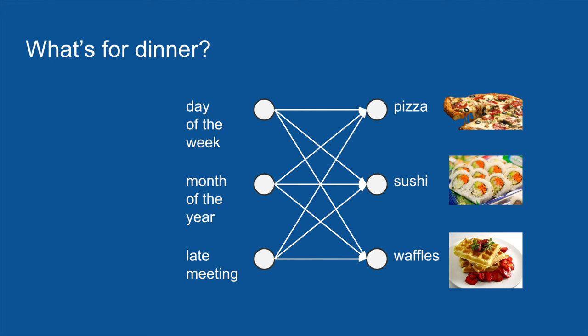The trouble is that your network doesn't work very well. Despite carefully choosing your inputs and training it thoroughly, you still can't get much better than chance predictions on dinner. As is often the case with complicated machine learning problems, it is useful to take a step back and just look at the data. And when you do that, you notice a pattern: your flatmate makes pizza, then sushi, then waffles, then pizza again in a cycle. It doesn't depend on the day of the week or anything else — it is a regular cycle.